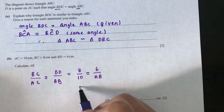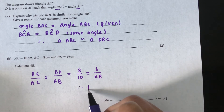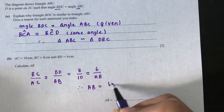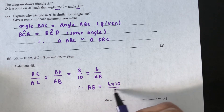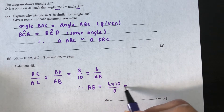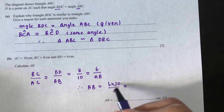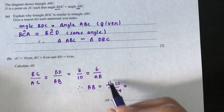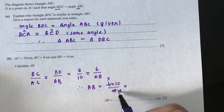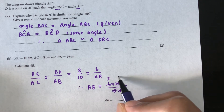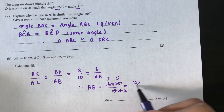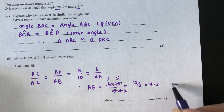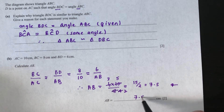We need to find AB. Cross multiplying: AB equals 6 times 10 divided by 8, which gives 60 divided by 8, which is 15 divided by 2, which equals 7.5. So AB equals 7.5 cm.